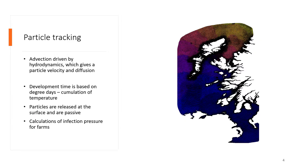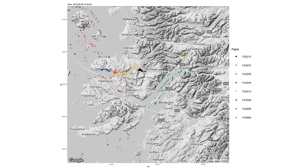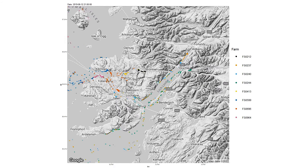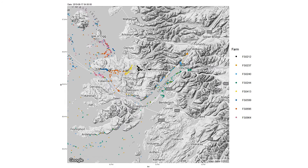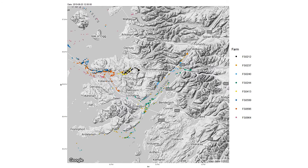This animation shows a release of 120 particles every single day and the dispersal from eight different sites around Scotland. Up in the top right, just underneath Fort William, is Loch Linnhe, where we see a lot of particles being advected quite quickly out of the loch, moving south through the Sound of Mull and towards Loch Sunart. We also see a huge amount of retention occurring inside Loch Sunart, as opposed to sites where particles are advected quickly away.